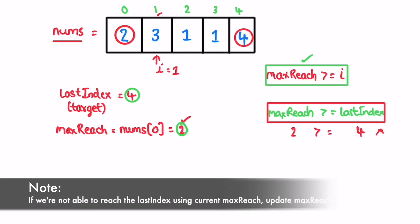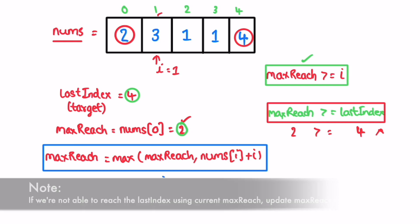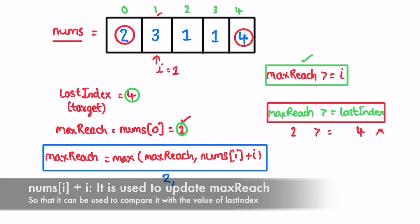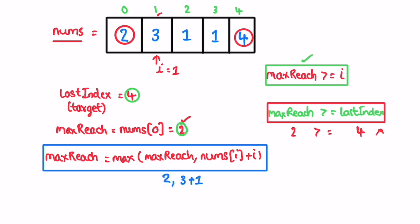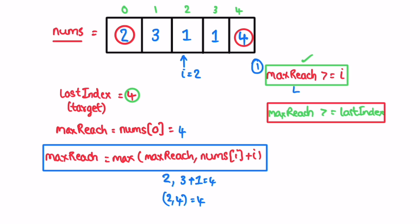So we update our max reach. We check if the current max reach which is 2, or nums of i plus i — nums of i is pointing at 3, so 3 plus 1 is 4. Max reach will be updated to 4 and we go to the next iteration. The first condition to check: max reach of 4 is greater than or equal to i which is 2 — yes. The second condition inside the for loop: max reach of 4 is greater than or equal to last index which is also 4. With the current max reach capacity you are able to reach the last element — from 3 you are able to jump till exactly the last element. So if this is true, you return true as the output.